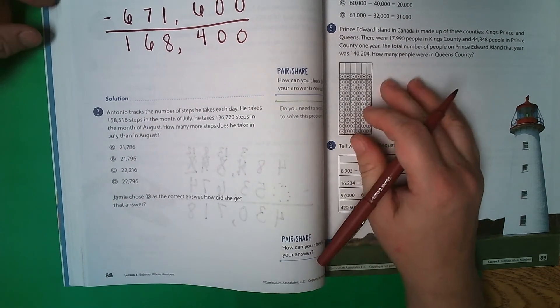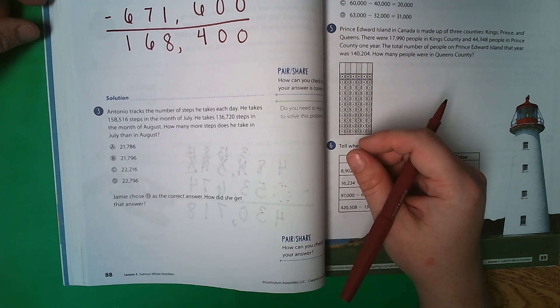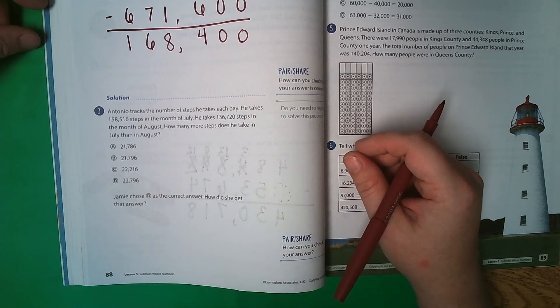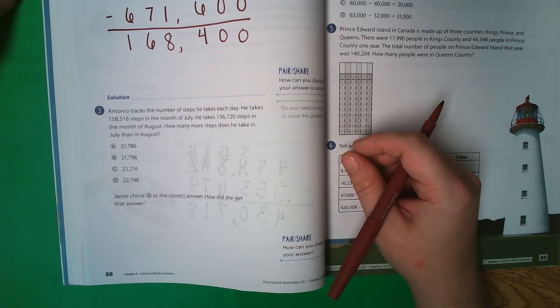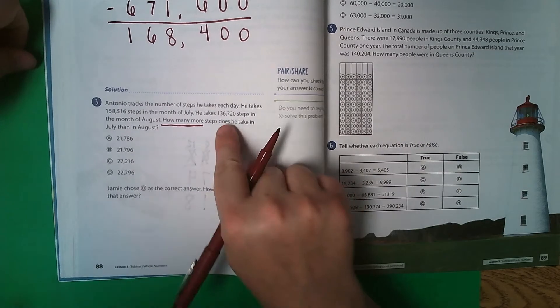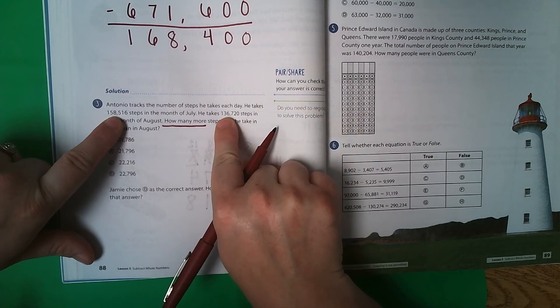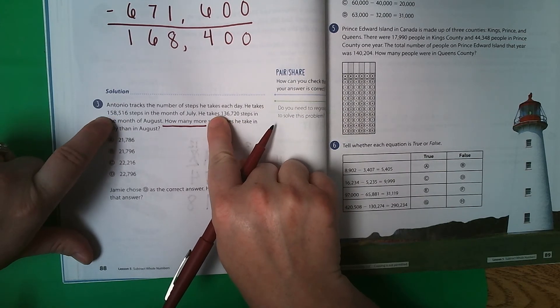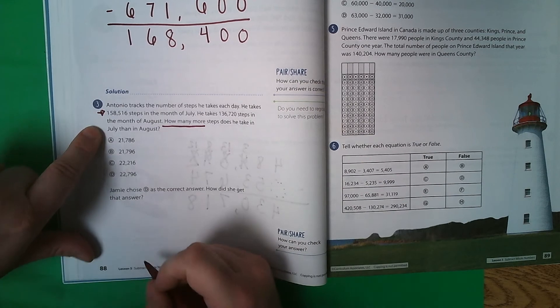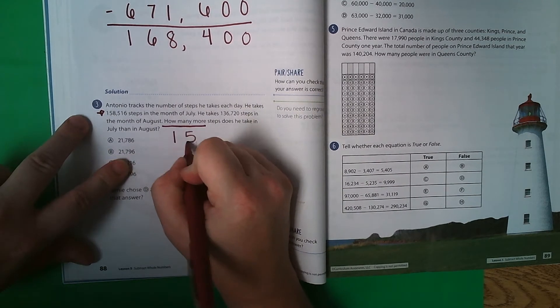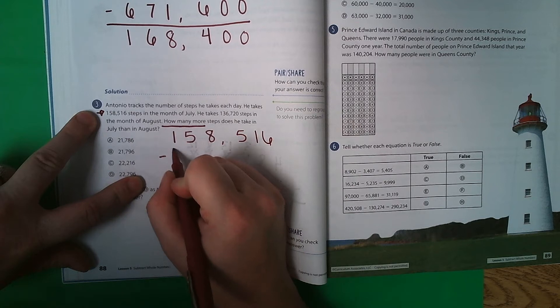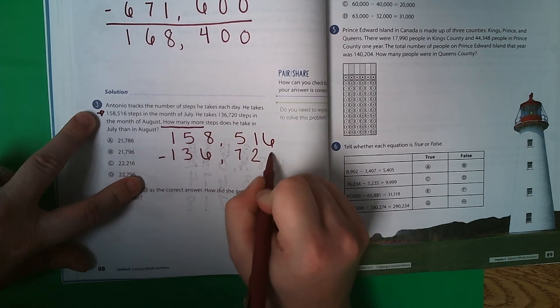Antonio tracks the number of steps he takes each day. He takes 158,516 steps in the month of July. He takes 136,720 steps in the month of August. How many more steps does he take in July than in August? So I'm looking at these two numbers, and I've got to decide which one is bigger. They both have a 1 in the 100,000's. This one has a 3, and that one has a 5. So this is my bigger number, so that is the number I'm going to put on top.